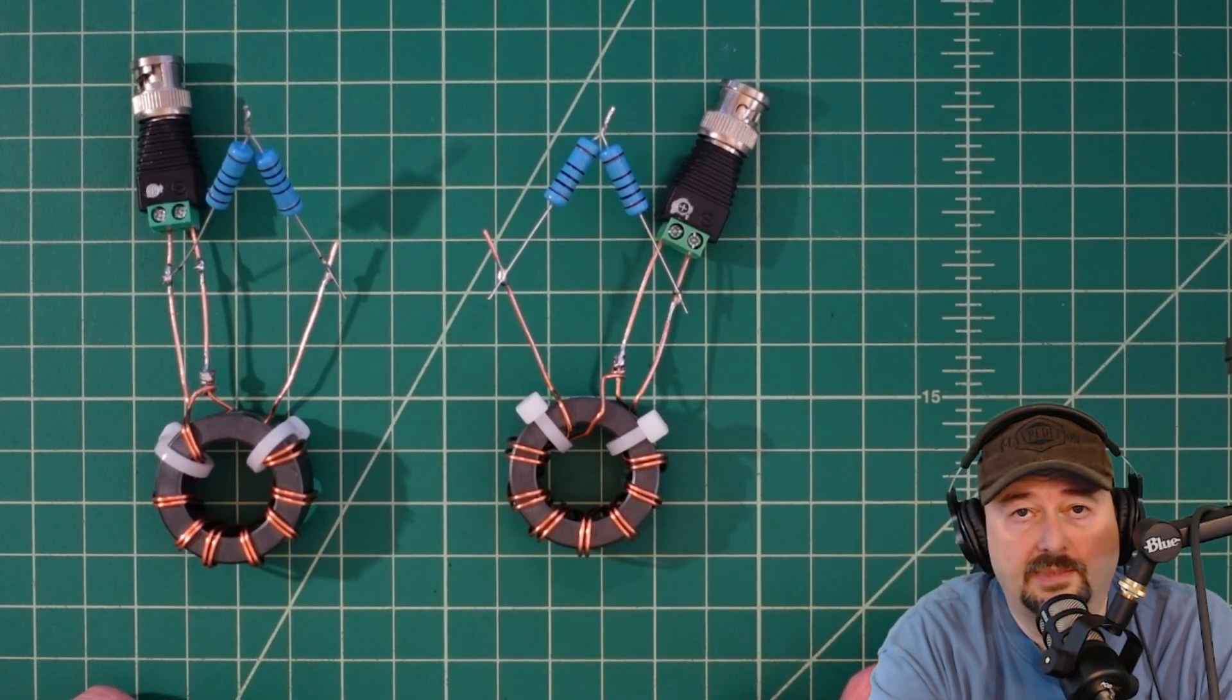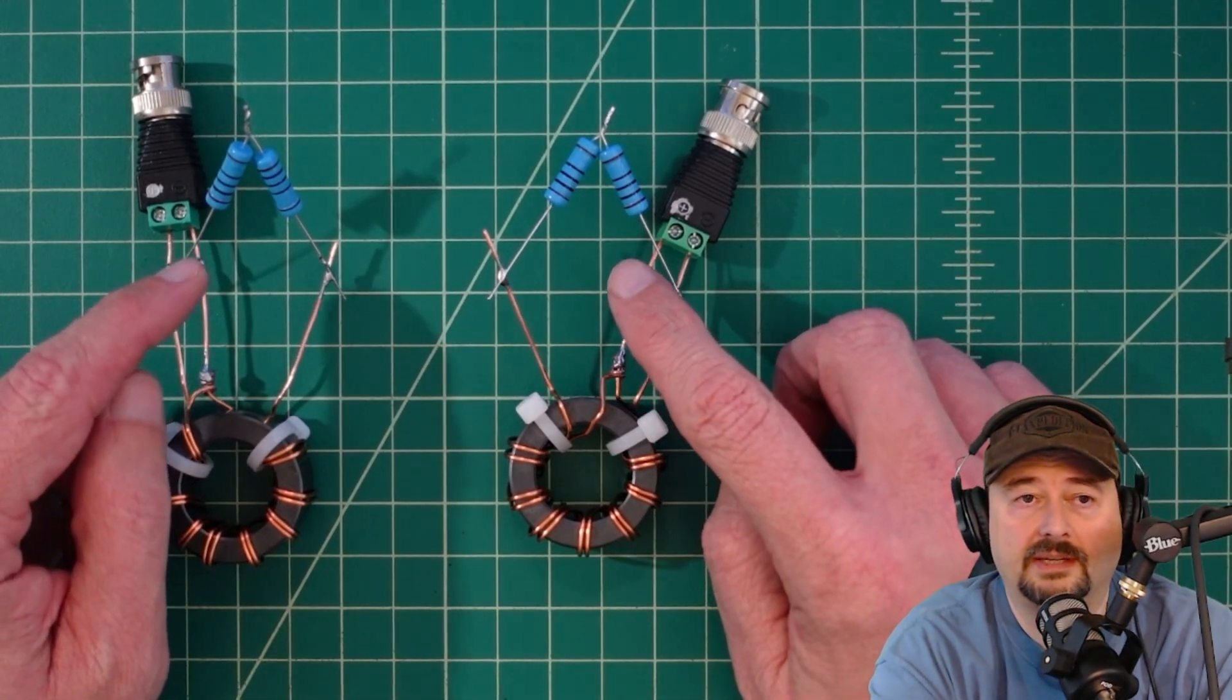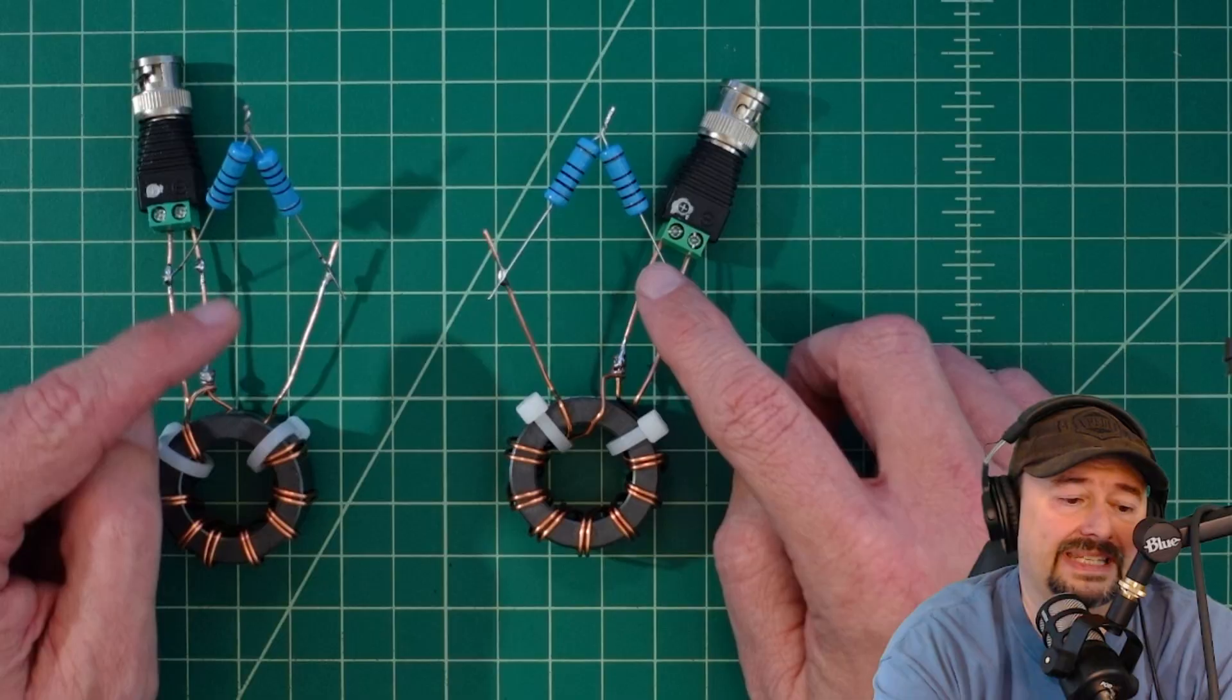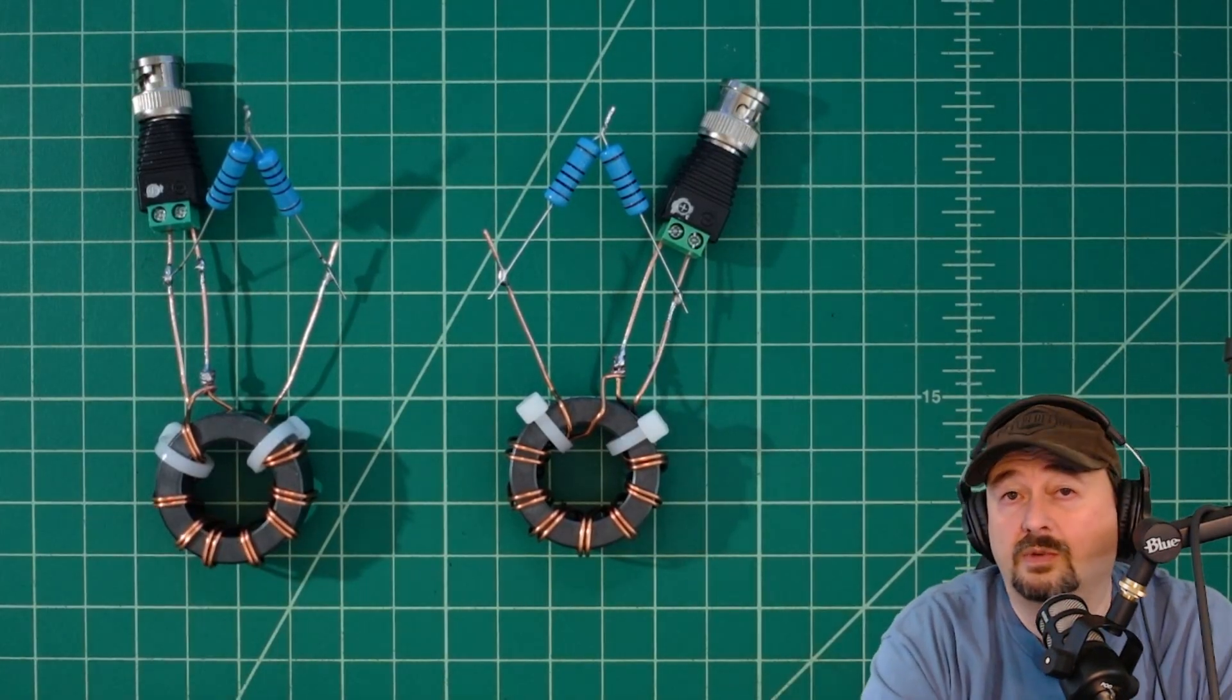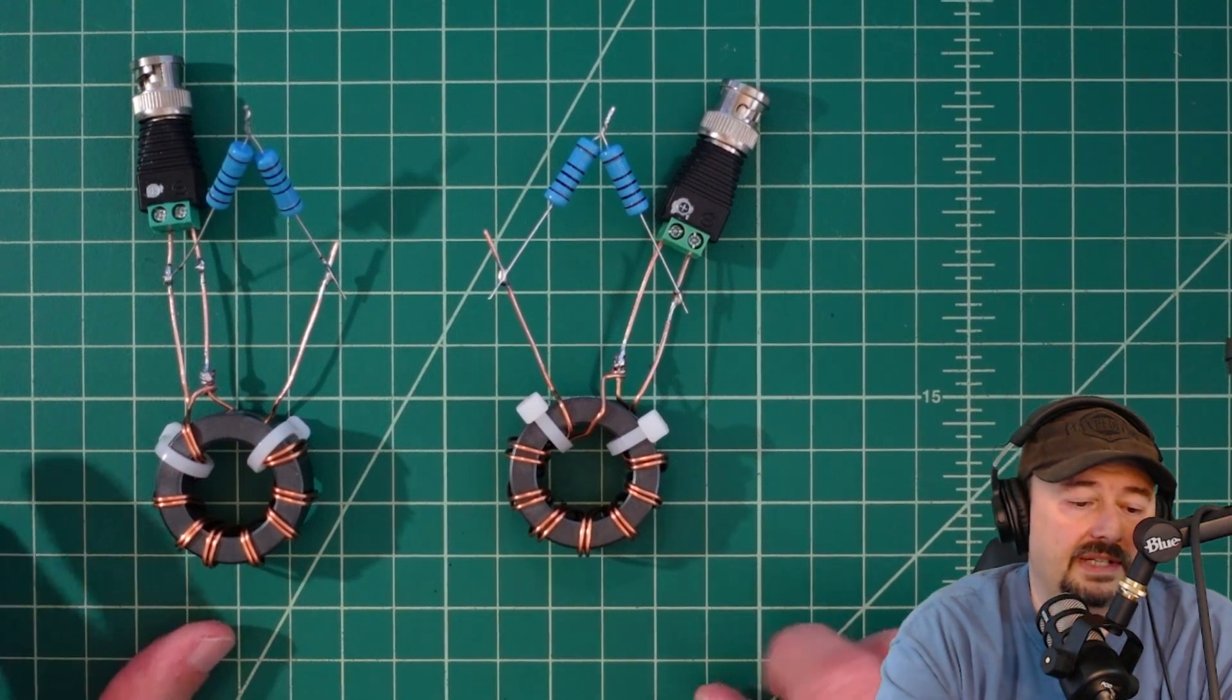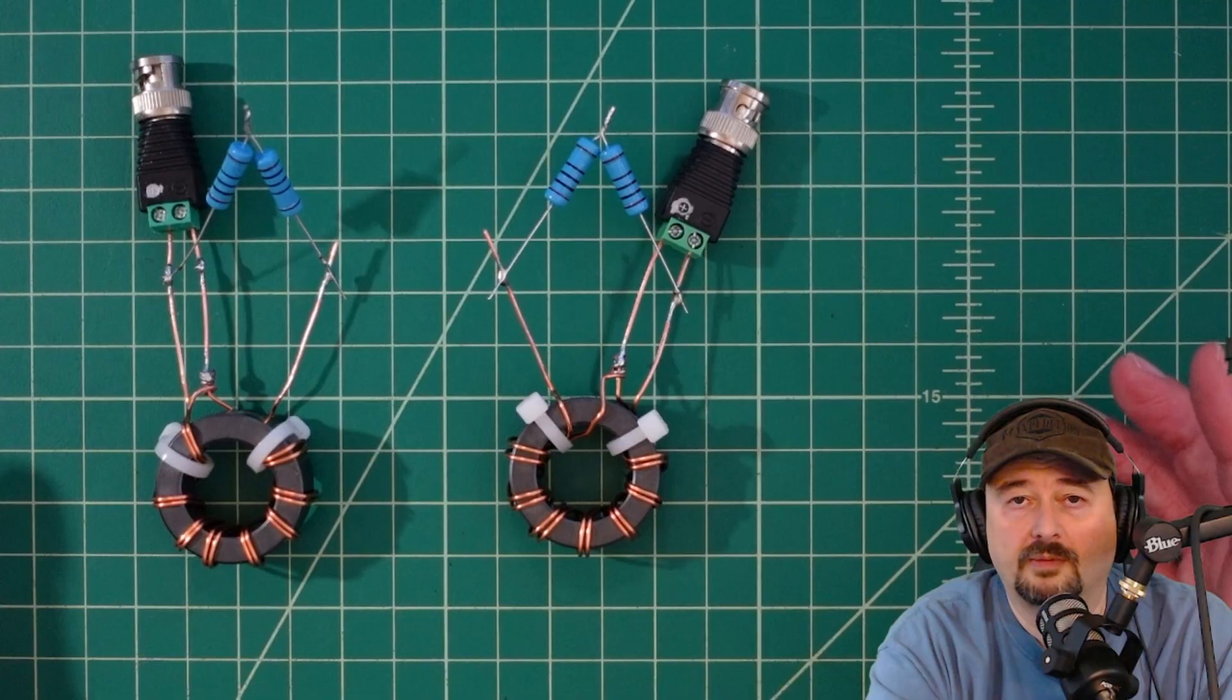In this case, being amateur radio operators, our loads are typically antennas. To simulate the antennas I'm using these 100 ohm resistors in series, which comes out to a 200 ohm load. Towards the end of the video we're going to test these with a nanoVNA to see what our SWR match is.